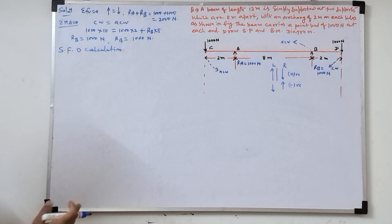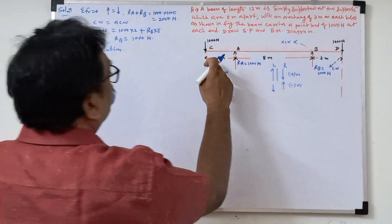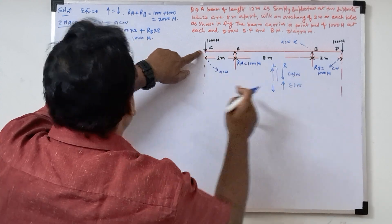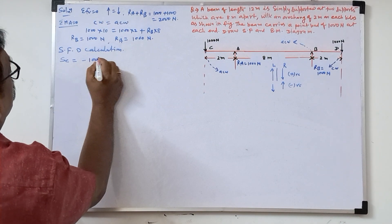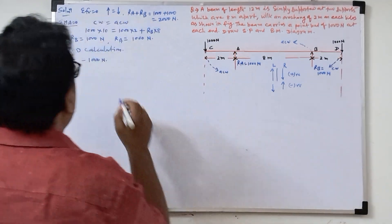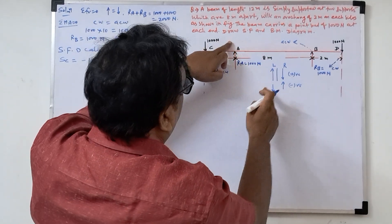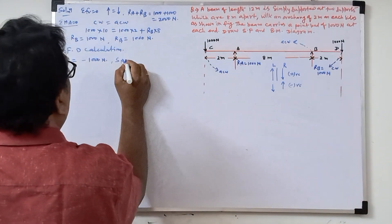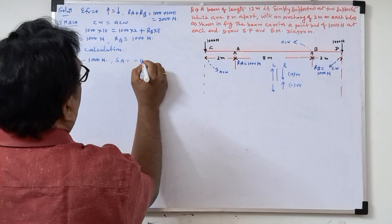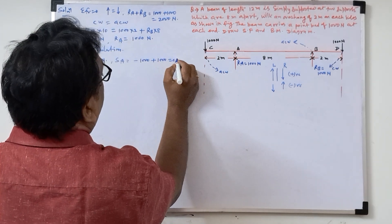Now shear force at C: I am taking from the left side, downward force is negative, so minus thousand Newton. Now shear force at A: left side upward is positive. In between C and A it is minus thousand, and at point A, with the reaction of thousand, it is coming zero Newton at A.